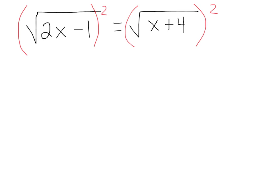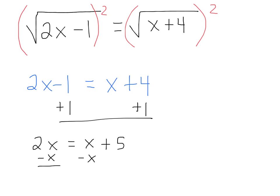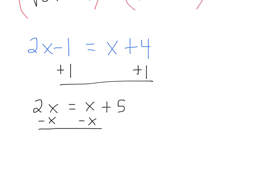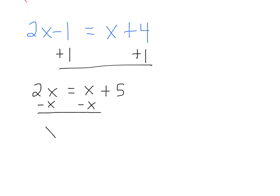And so it leaves you with 2x minus 1 equals x plus 4. And now we just have a regular old linear equation that we can solve. So what would we do to it? Add 1 to both sides. And so I have 2x equals x plus 5. Subtract the x on both sides. Say it. And so I have x equals 5. And there's my answer right there.